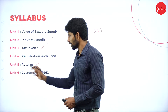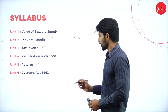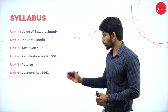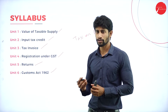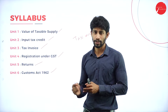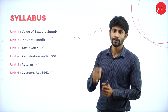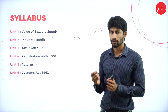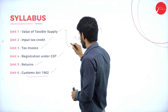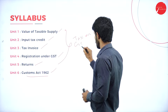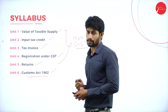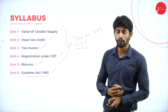Unit 6 fully deals with the Customs Act 1962, also called customs duty, which is applicable on imports and exports. We'll study the different kinds of transactions, different types of taxes, conditions for imposing customs duty, and the types of products on which customs duty is applicable. The first five units deal with GST and the last unit covers customs aspects.